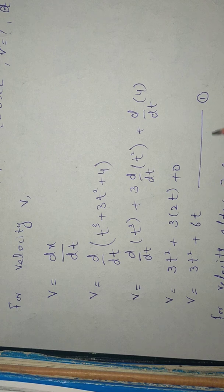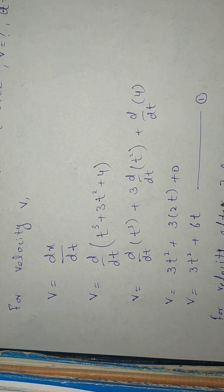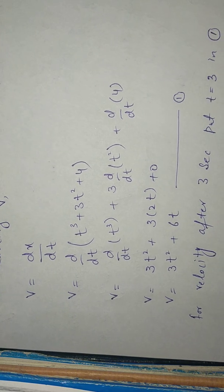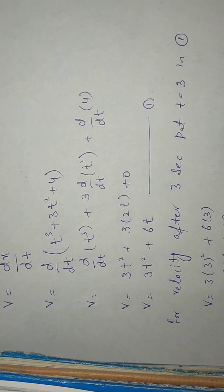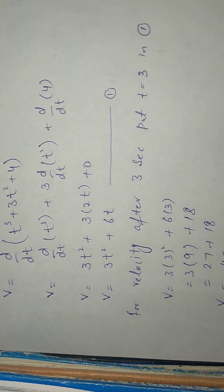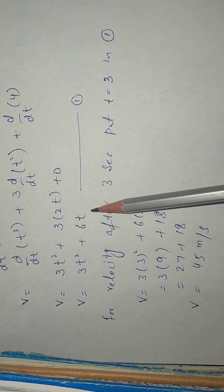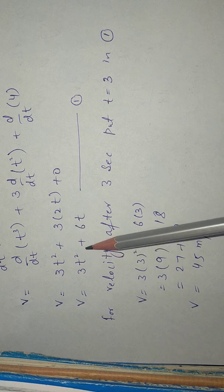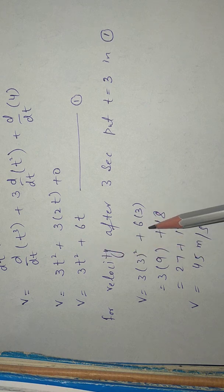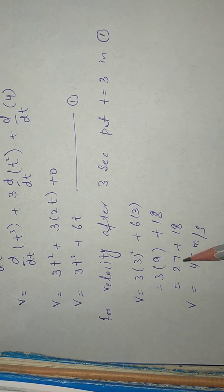We name this equation number one. Since we have to find velocity after three seconds, we put t equal to 3 in equation number one. So 3 squared is 9, and 3 times 9 is 27, and 6 times 3 is 18. Therefore 27 plus 18 gives velocity equal to 45 meters per second.